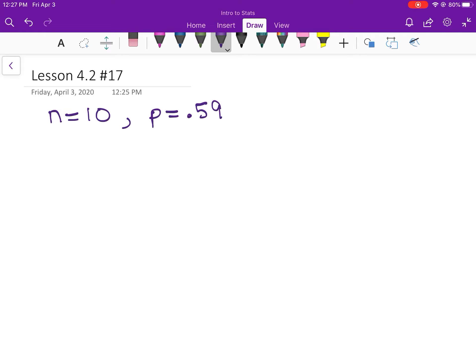Now what you need to know is that your q is the complement event. So if p is 59%, q is going to be 41%.